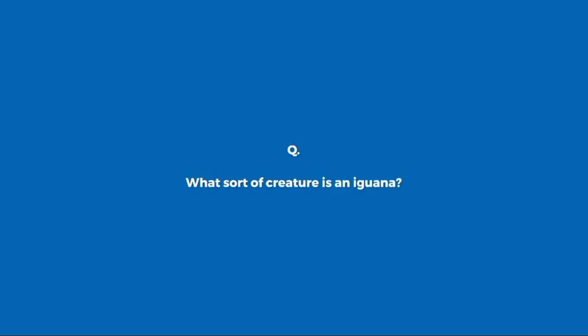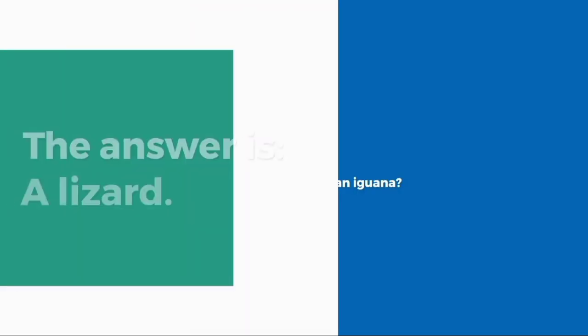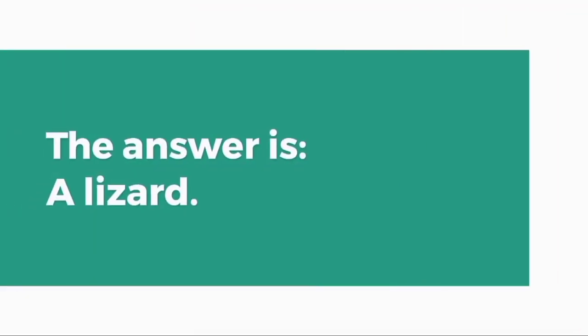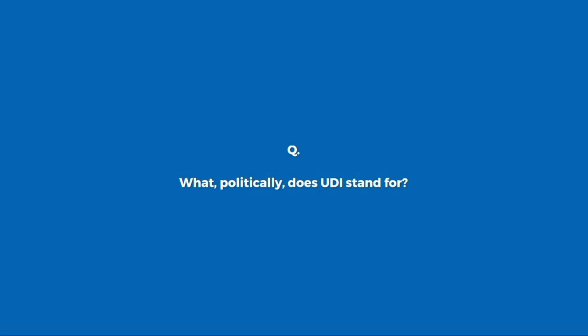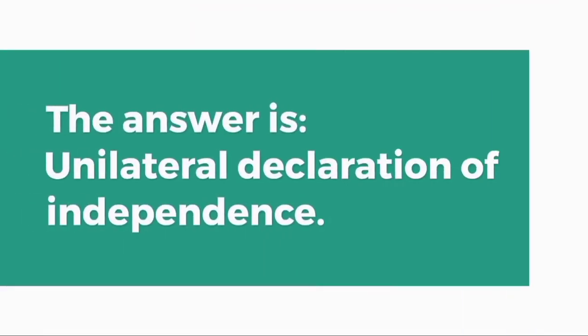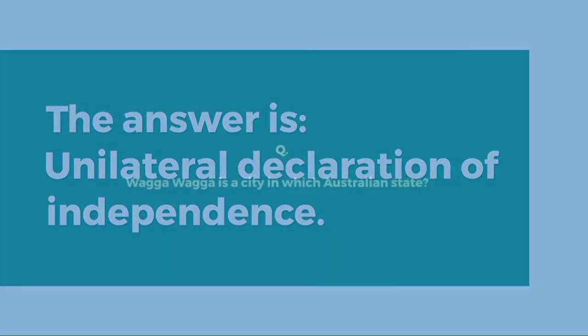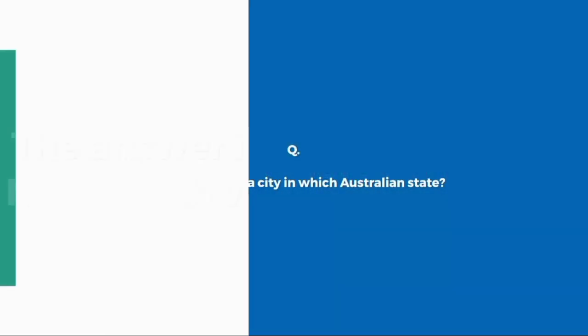What sort of creature is an iguana? A lizard. What, politically, does UDI stand for? Unilateral Declaration of Independence.